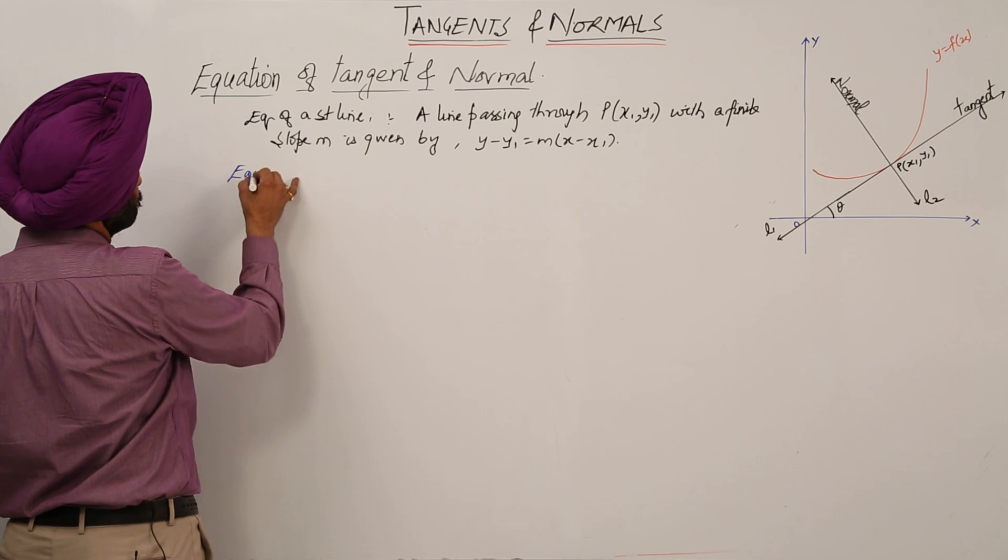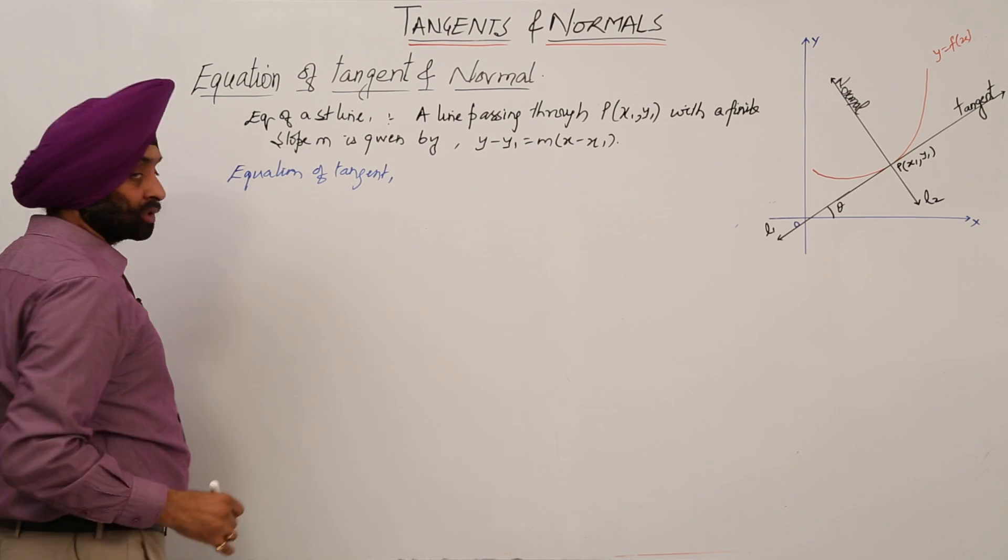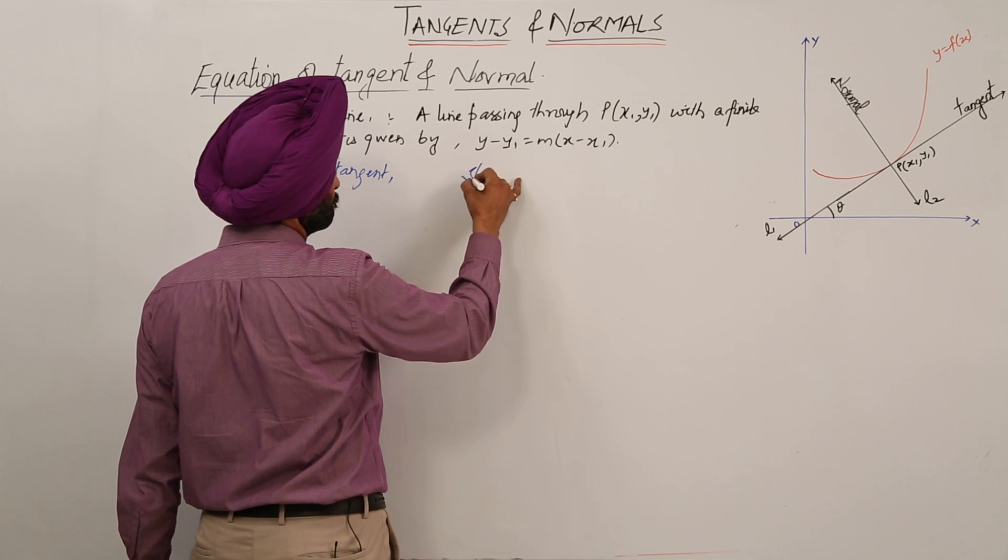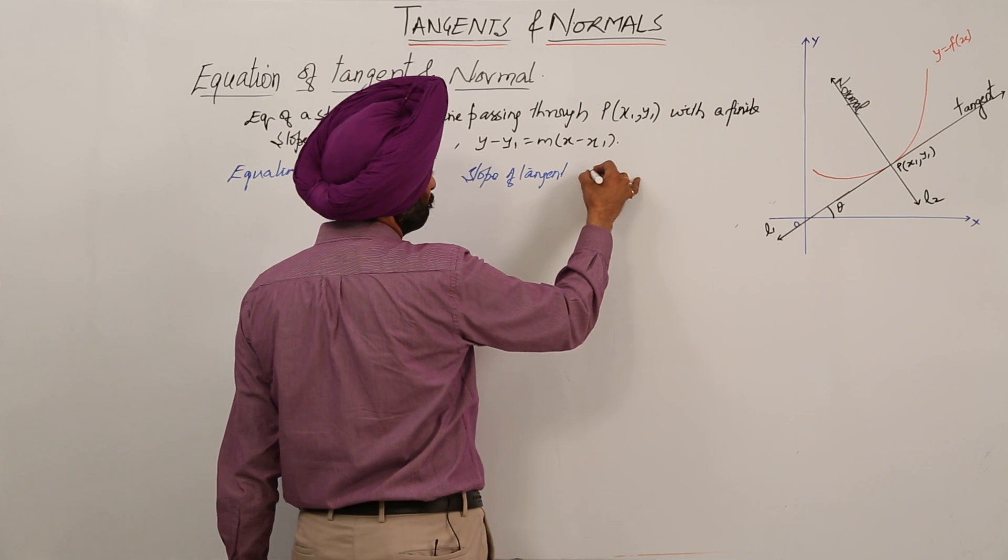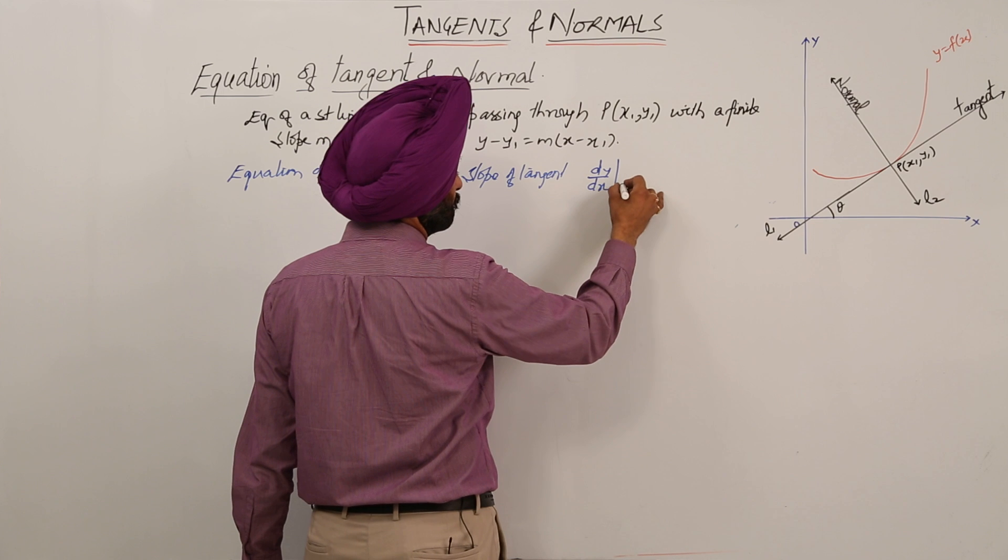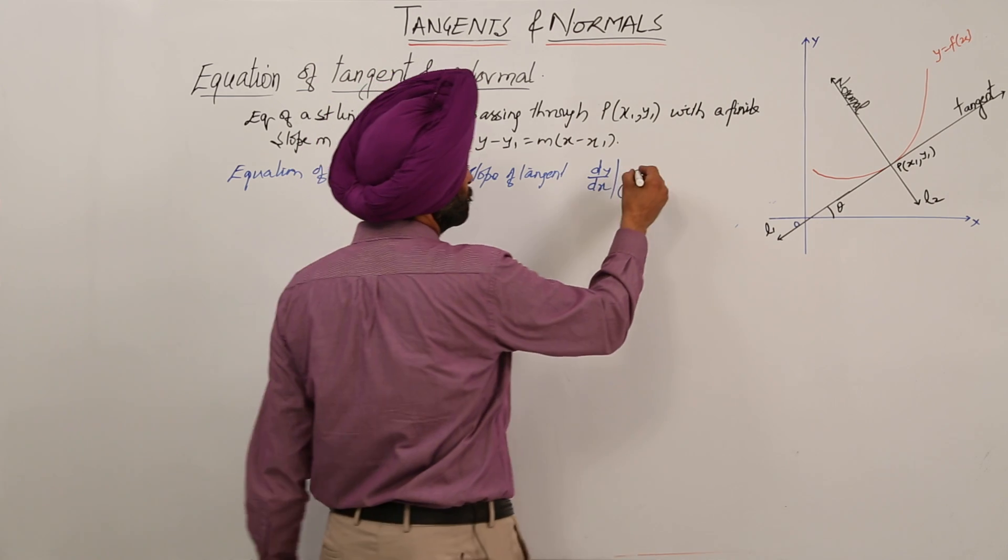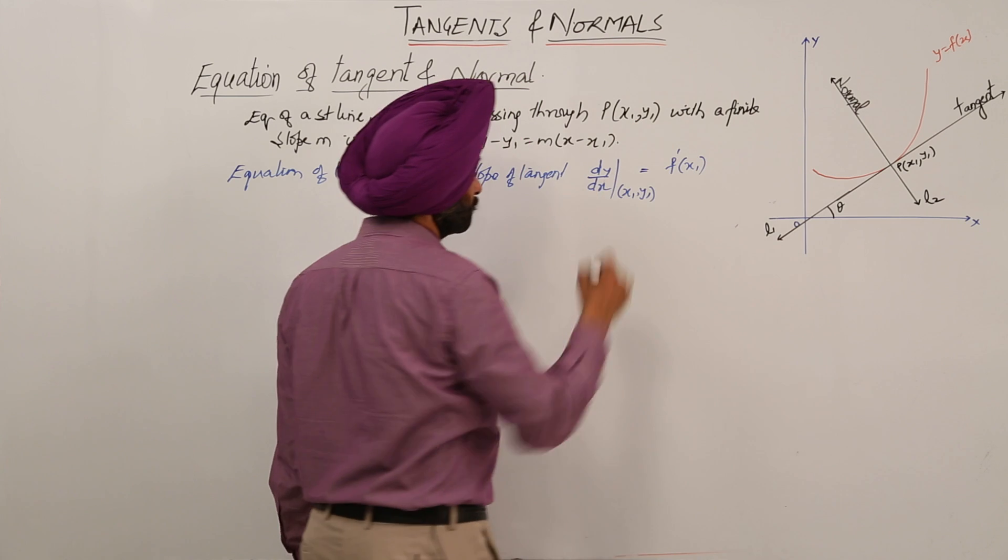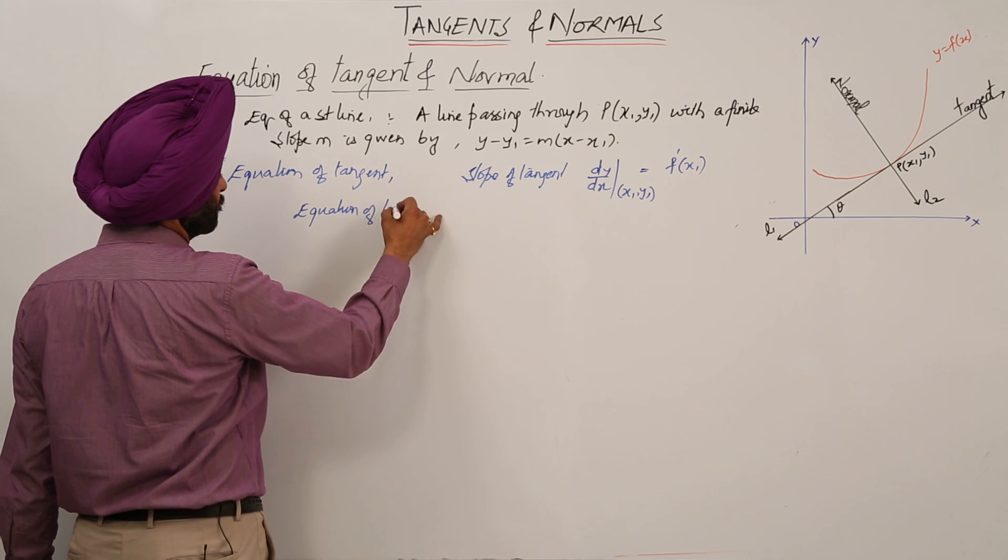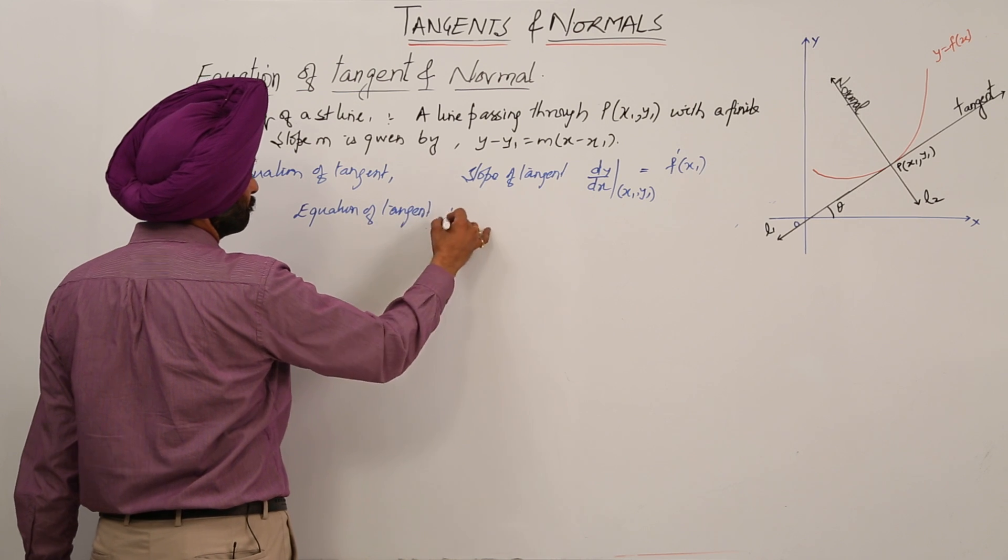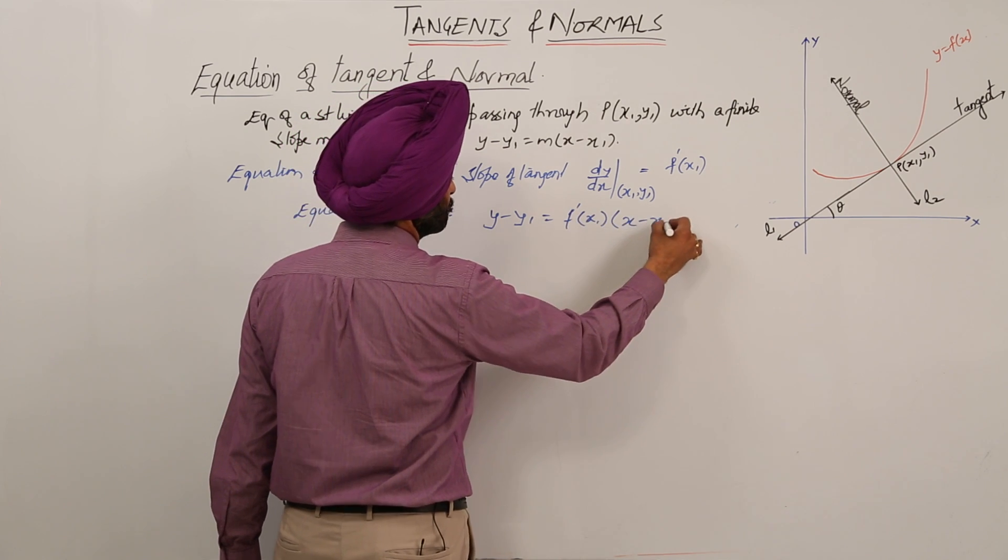Equation of a straight line, equation of tangent. Before going for the equation of a tangent, what was slope? Slope of tangent: dy/dx at point (X1, Y1), that is point P with coordinates (X1, Y1), is equal to F'(X1). So equation of tangent: Y - Y1 equals F'(X1) times (X - X1).